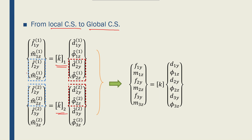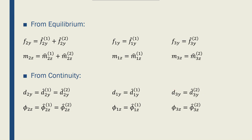Node 2 is common to both elements, so we have forces and displacements to reconcile. In total there are six nodal forces and six nodal displacements. We have three nodes, each with two degrees of freedom — displacement d and rotation phi — so we are looking for a 6x6 global stiffness matrix.